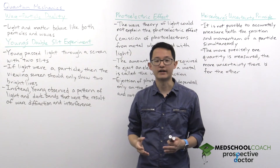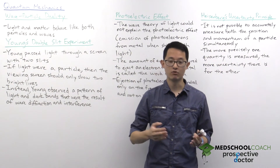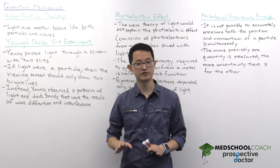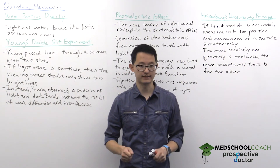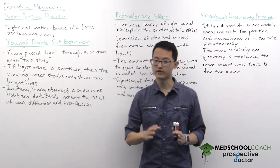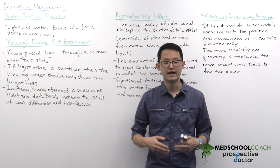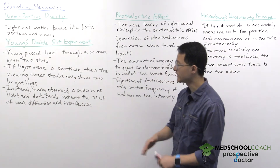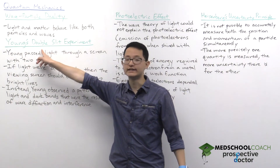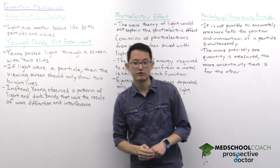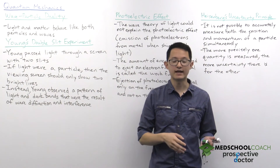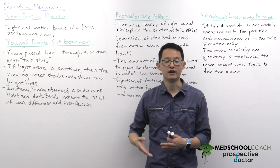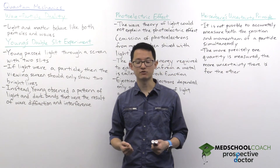Let's start with wave-particle duality. This is a concept that states that light and matter behave like both waves and particles. This is not very intuitive and is best understood by looking at the experiments that demonstrated it. We'll start first with classical mechanics, which thought of light as a wave, and we can understand this by looking at Young's double slit experiment. Young took light and shined it through a screen with two slits and looked at the results on a viewing screen.